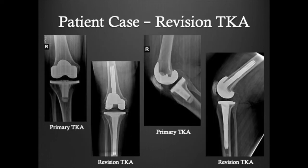This is a case of a revision knee replacement. The patient underwent a primary total knee replacement but had persistent pain and instability. As a result, the components were removed and the patient was given a revision total knee replacement. This necessitated the use of stemmed components, which are much longer. However, the patient regained great functional recovery with minimal pain.